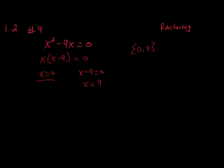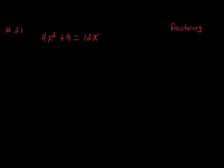Now for number 21, same thing — we're going to factor this, but it's slightly different than the previous one. The first thing we're going to do whenever solving a quadratic equation is make sure one side is equal to 0. So we're going to take the 12x and subtract it from both sides, ending up with 4x squared minus 12x plus 9 is equal to 0. Now we can go ahead and factor it.